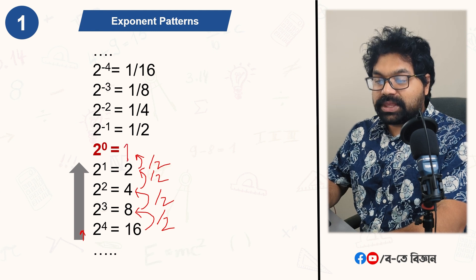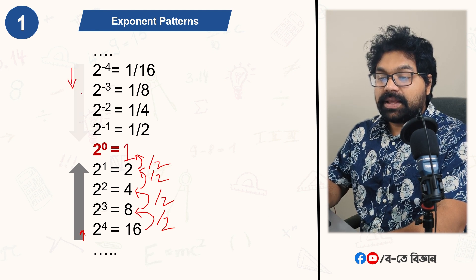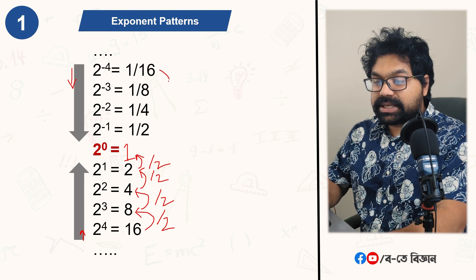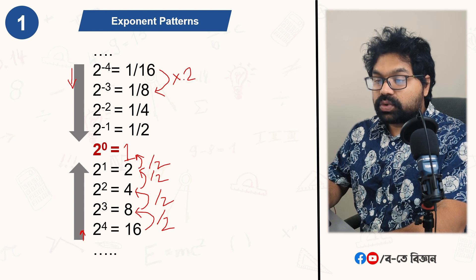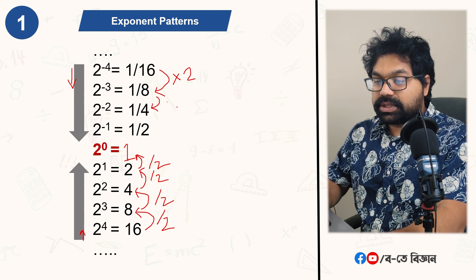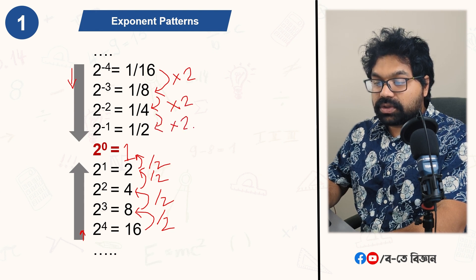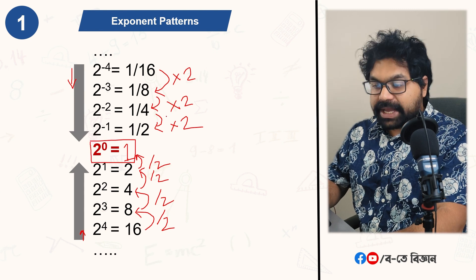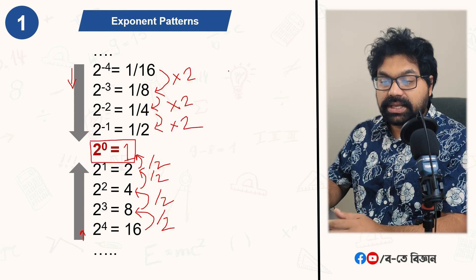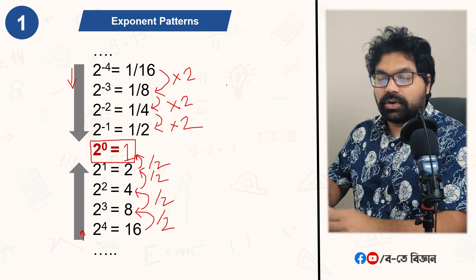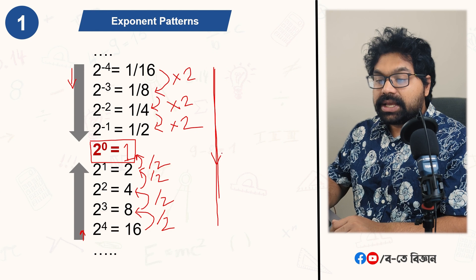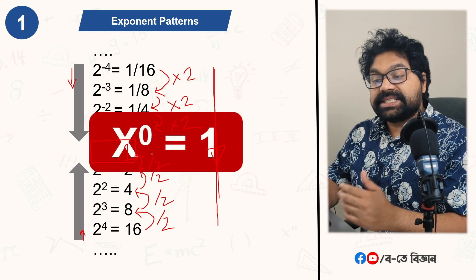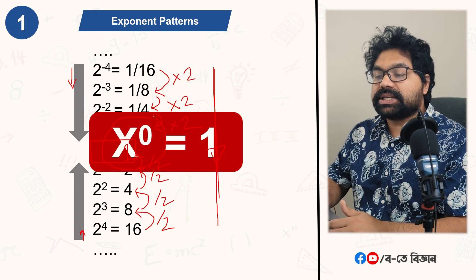Continuing the same pattern downward: when I divide by 2, it is 1/2. When I divide by 2, it is 1/4. When I divide by 2, it is 1/8. Mathematics is a language, and it follows rules. Following this same rule to complete the pattern, 2 to the power 0 equals 1.